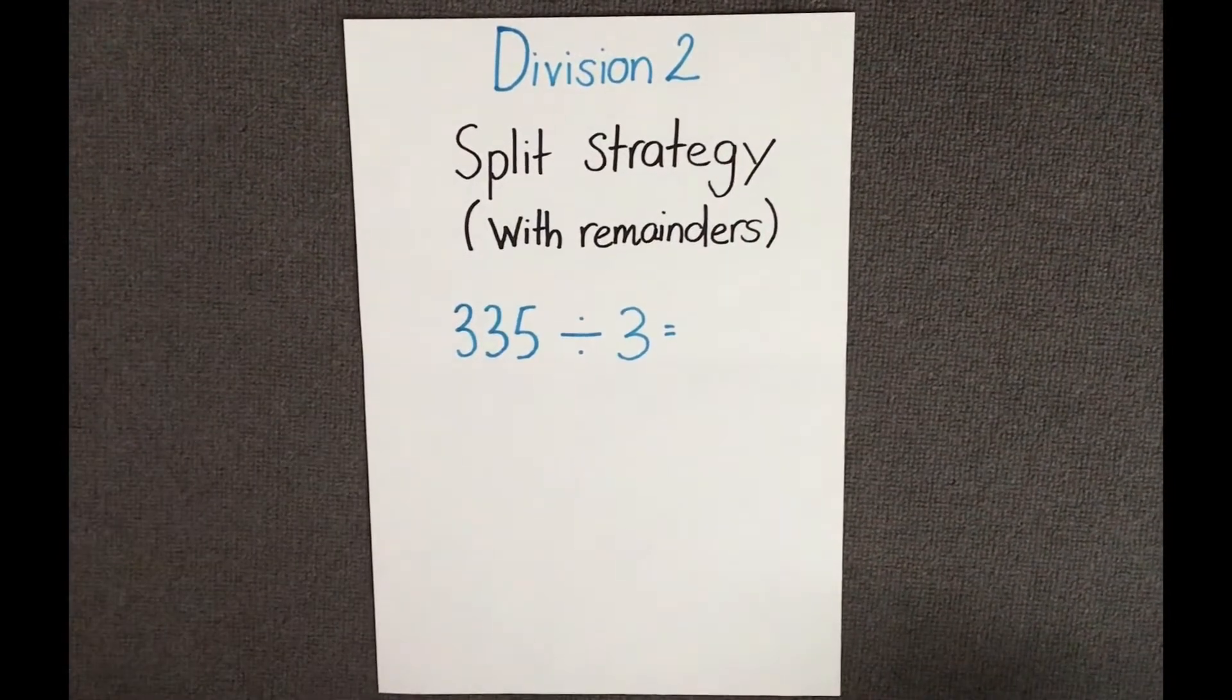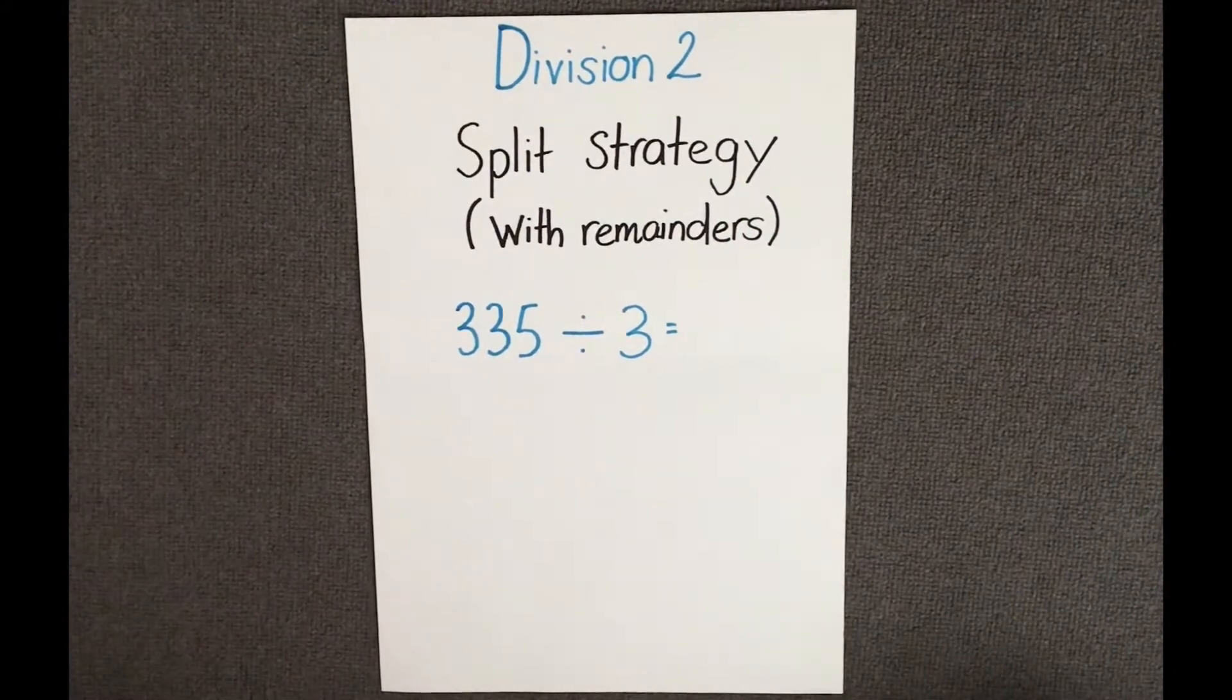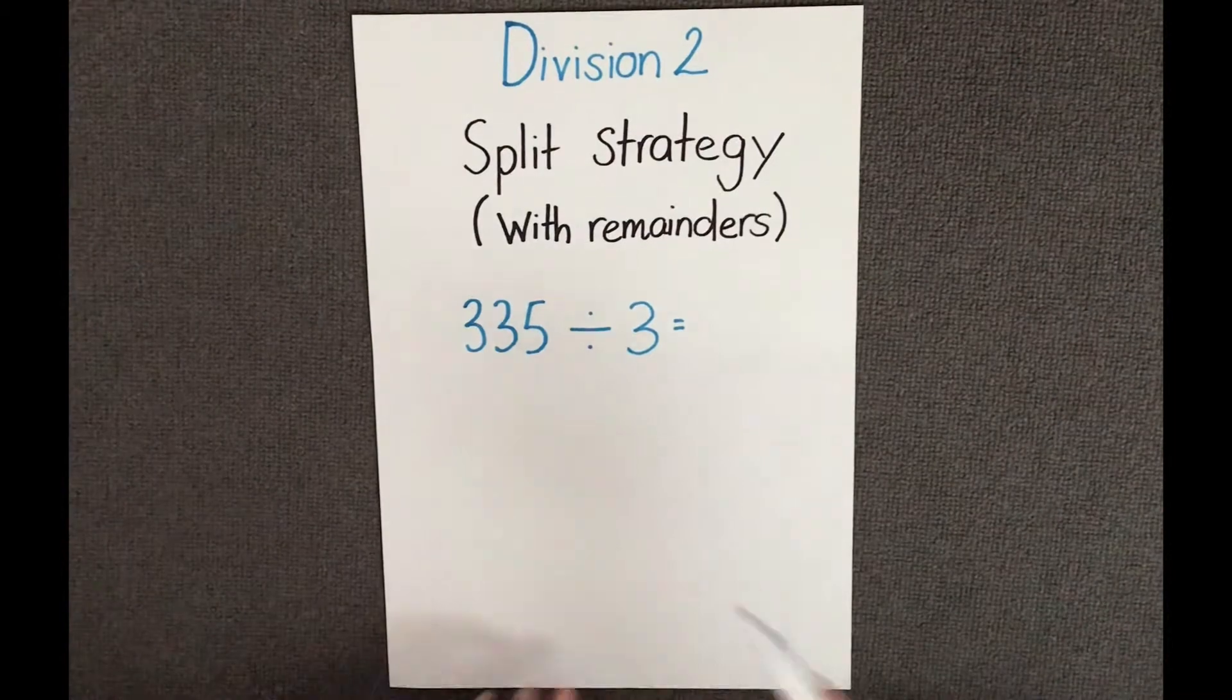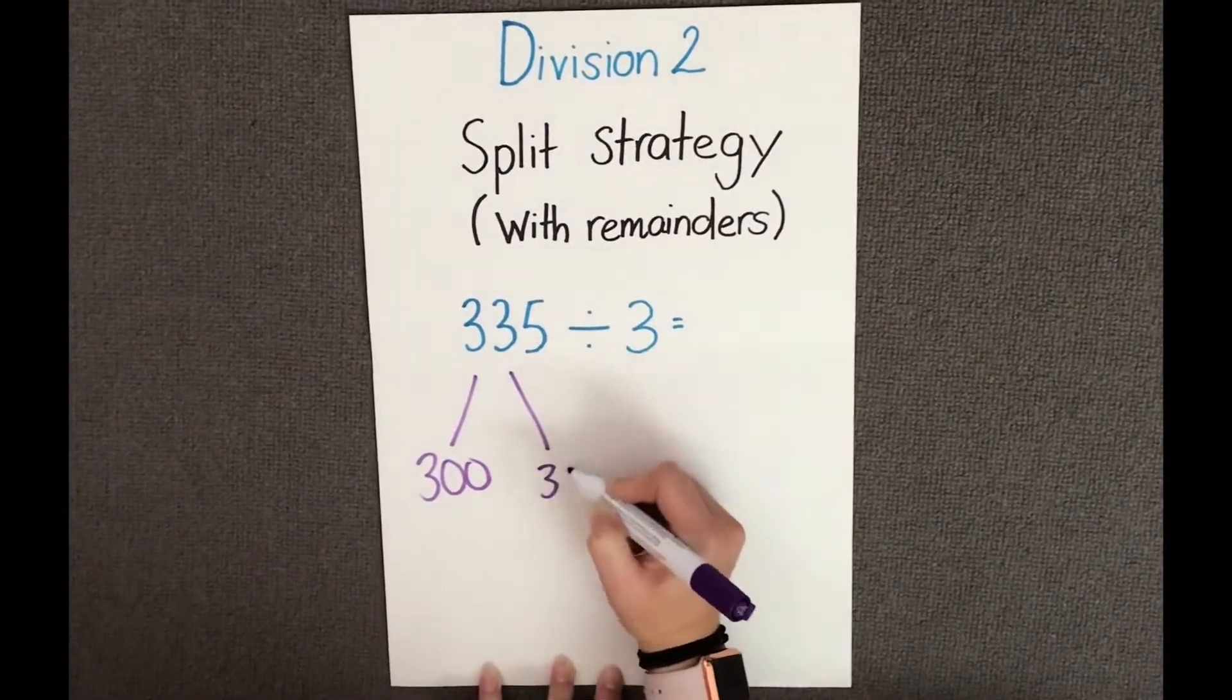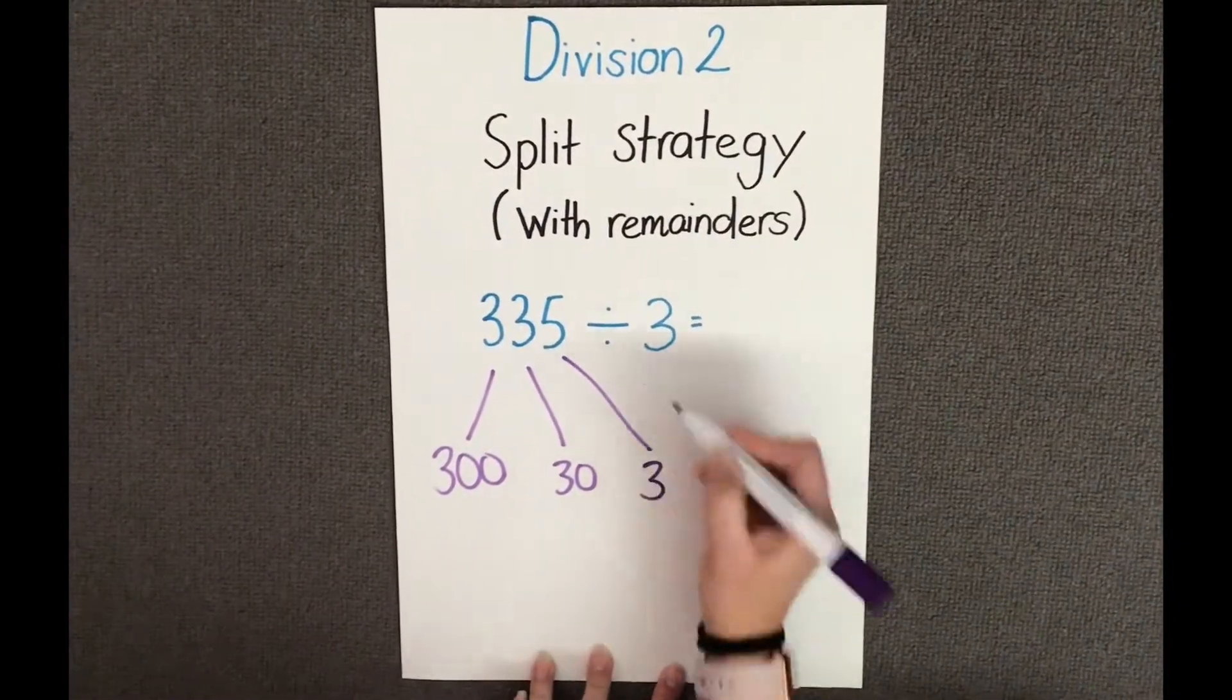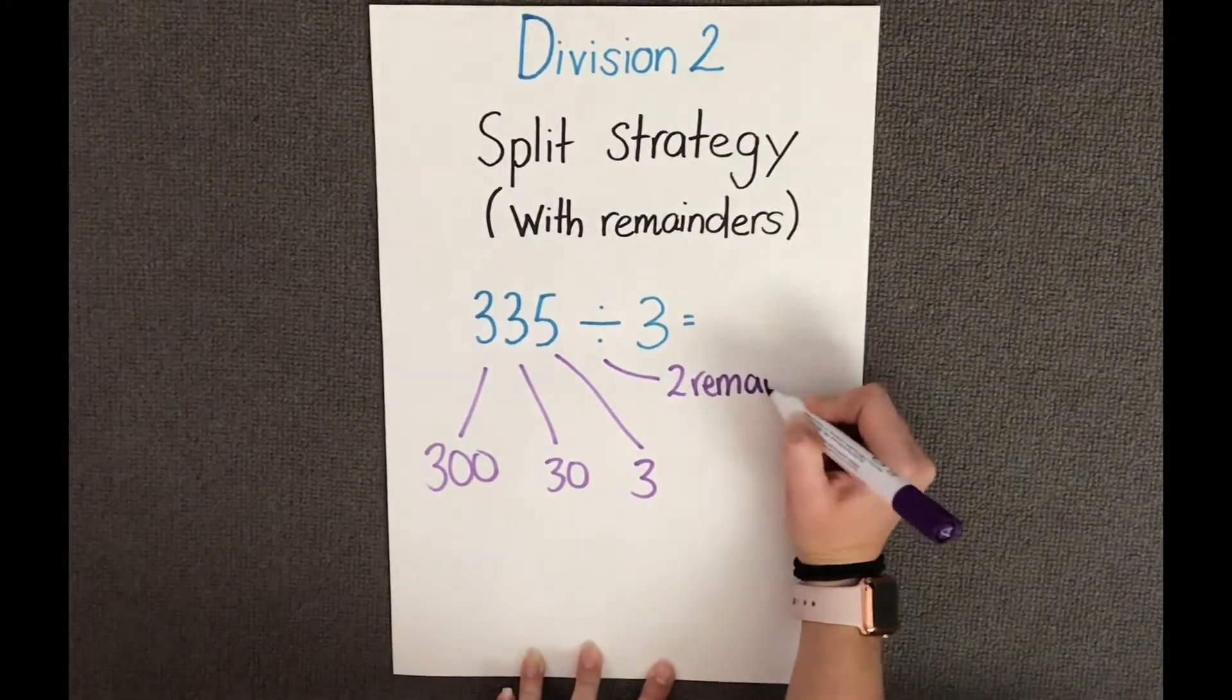The first thing we need to do is partition the number 335 into our hundreds, tens, and ones so that we can divide it by three easily. I'm going to split it up and we're going to have 300, I'm going to have 30, and as we've got remainders, I'm going to have three ones and I'm going to have two remainder because five doesn't share by three equally.